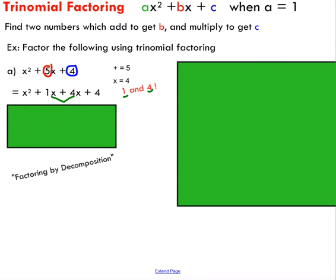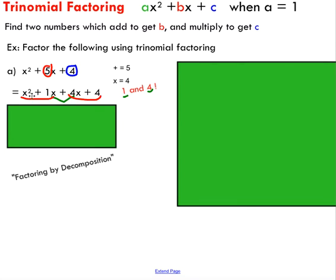The next step is to look at our expression and group our four terms based on their similarities. The first two terms both have a four in common, so I'll group those. The other two terms both have an x in common, so we group into two pairs. We do this because we're going to common factor each group based on their similarities.